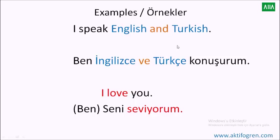'I speak English in Turkish.' As you see here, the blue words are the objects. 'Ben' means 'I,' 'English' and 'Turkish' are the objects, and 'konuşurum' means 'speak.' So 'ben' and 'konuşurum' — as you see in this example, we put the action verb at the end of the sentence. In Turkish it works this way all the time. But in English we put the action verb right after the subject pronoun or personal pronoun.